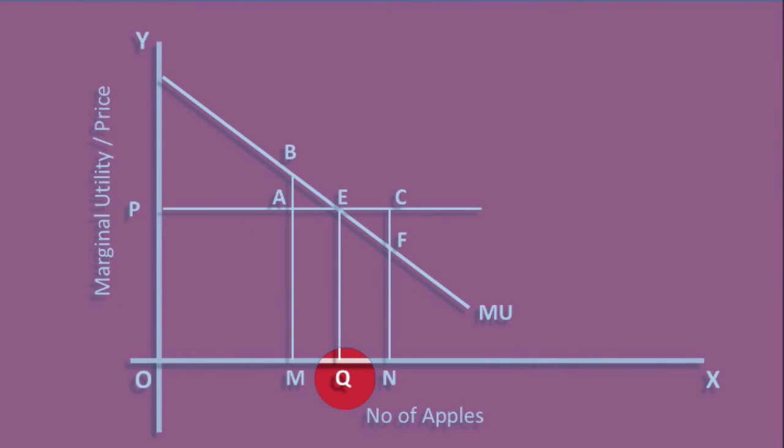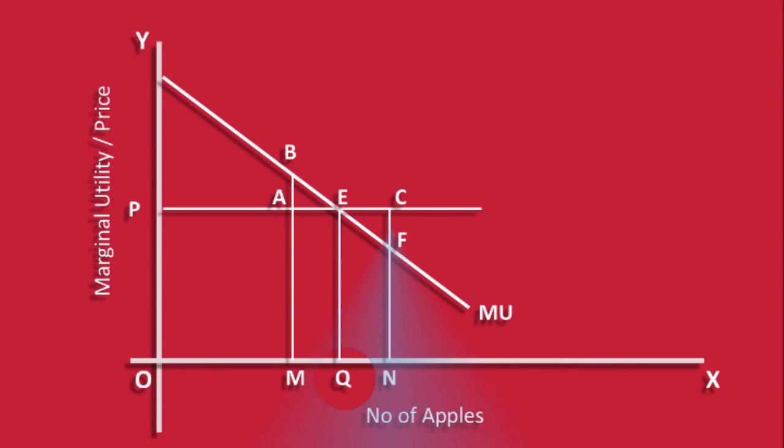Finally, the consumer will consume Q number of apples and be in equilibrium.